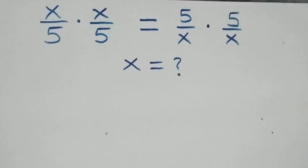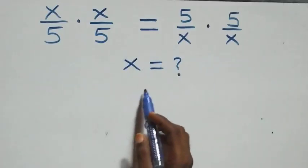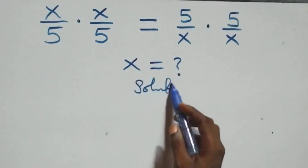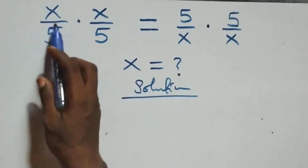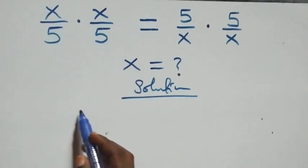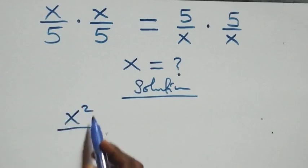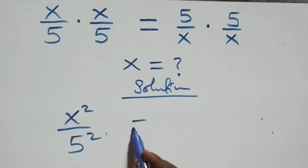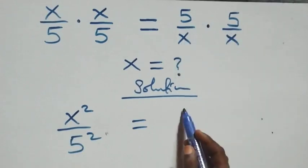Welcome, how to solve this nice algebraic equation. What we have here: we can multiply directly x times x, same thing as x squared, then over five times five, also we have five squared, which is equal to this side as well — five times five, that's five squared.